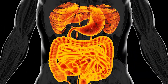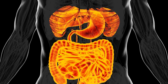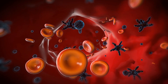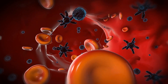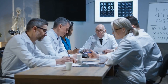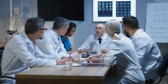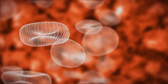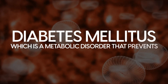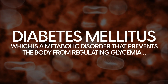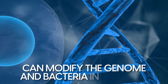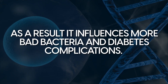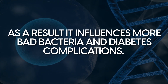When this happens, the intestines may struggle to do their job, and as a result, it may influence insulin resistance, blood glucose, inflammation, and increases the risks of diabetes complications. Scientific reviews have observed that diabetes and gut health go hand in hand. Diabetes, especially diabetes mellitus, which is a metabolic disorder that prevents the body from regulating glycemia, can modify the genome and bacteria in the gut, and as a result, it influences more bad bacteria and diabetes complications. Additionally, poor gut health can lead to the same results.